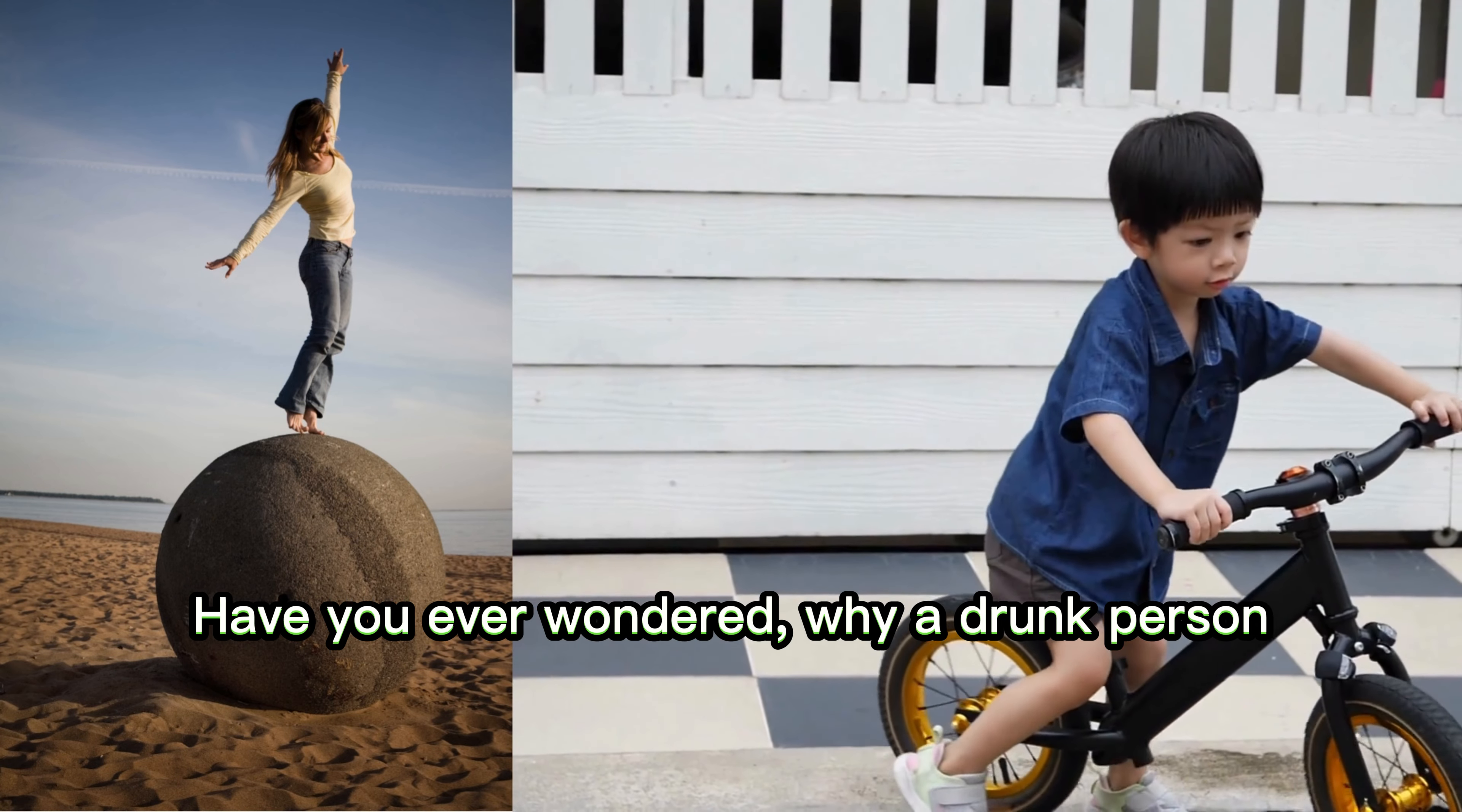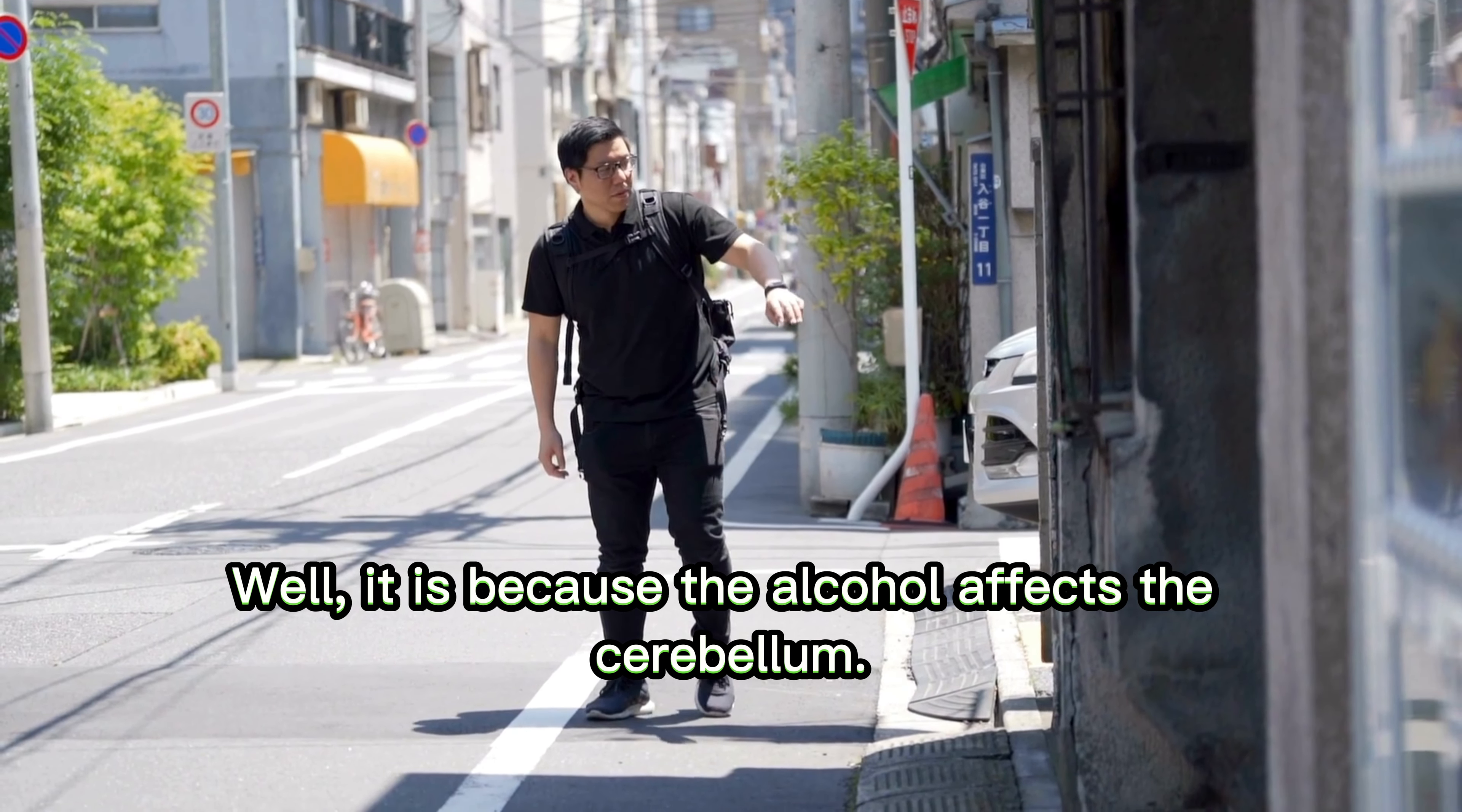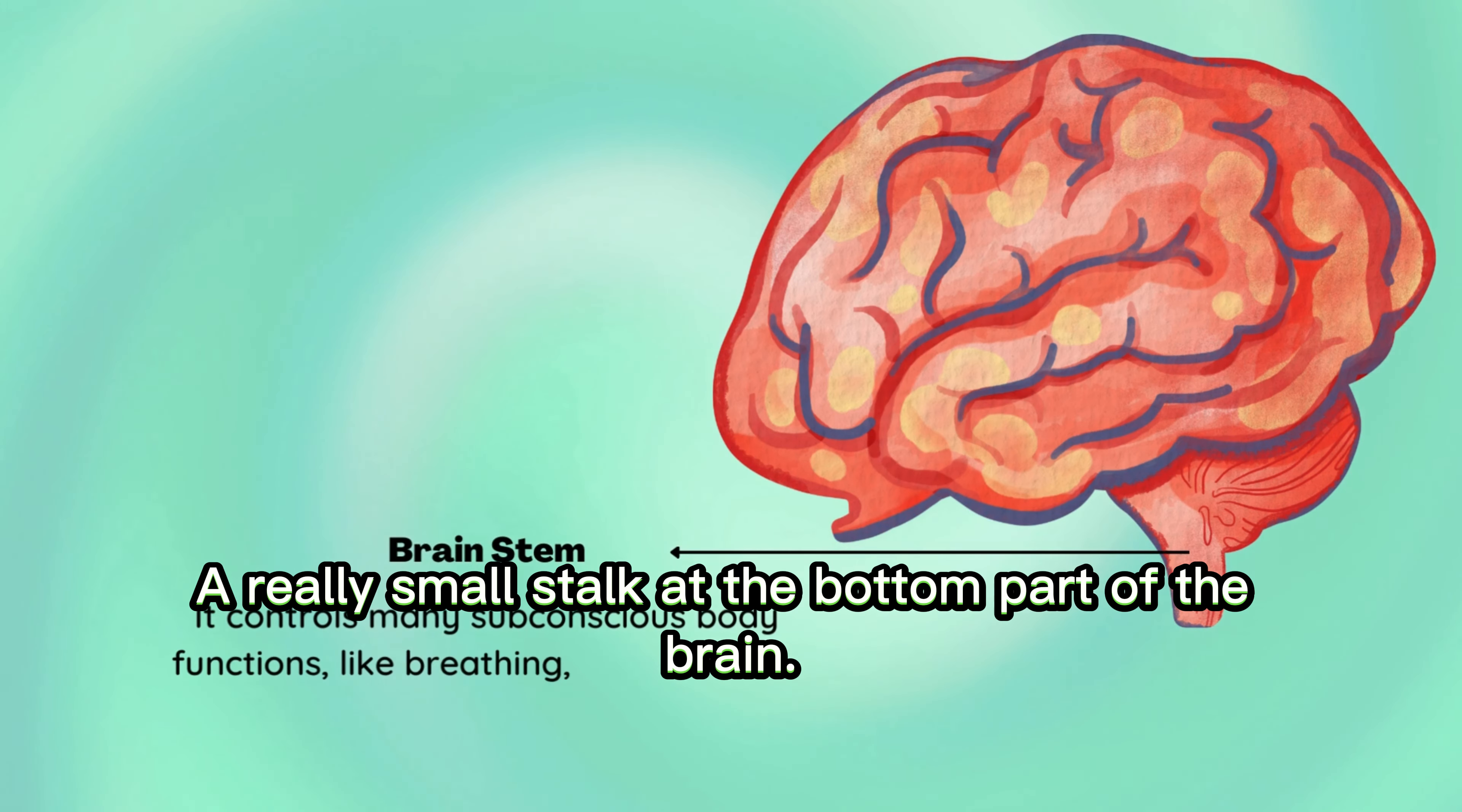Have you ever wondered why a drunk person, that is a person who drinks alcohol, cannot walk properly? Well, it is because the alcohol affects the cerebellum.